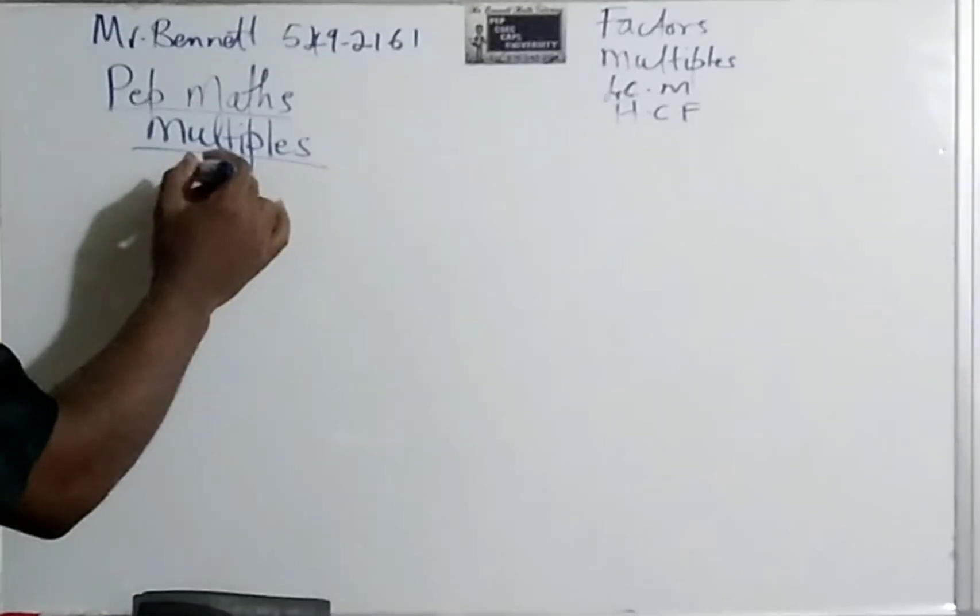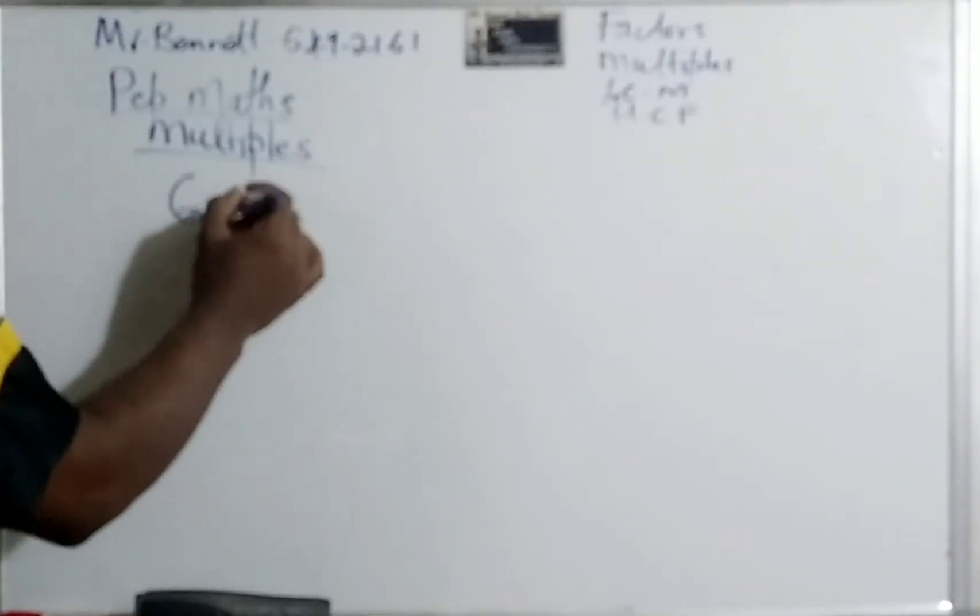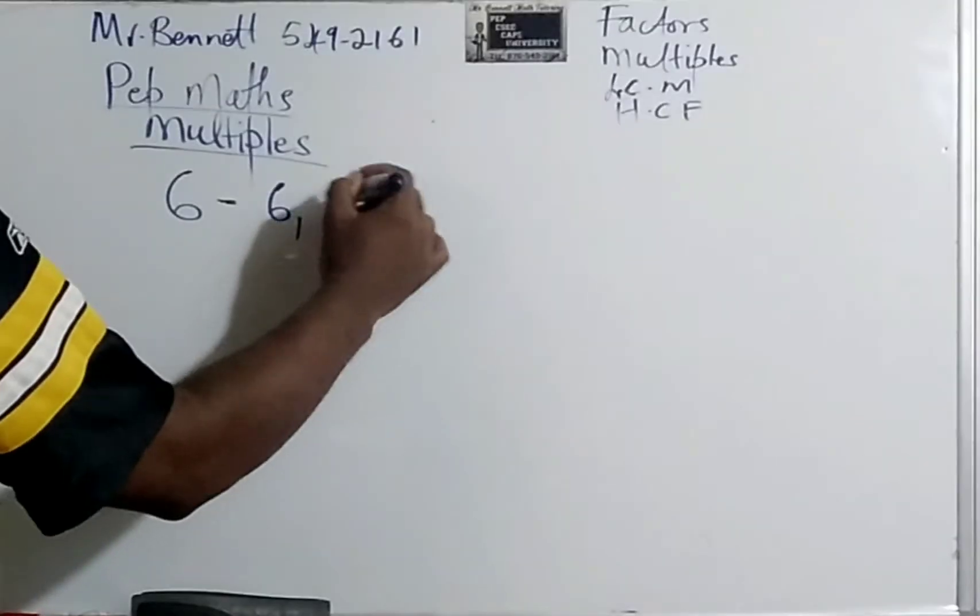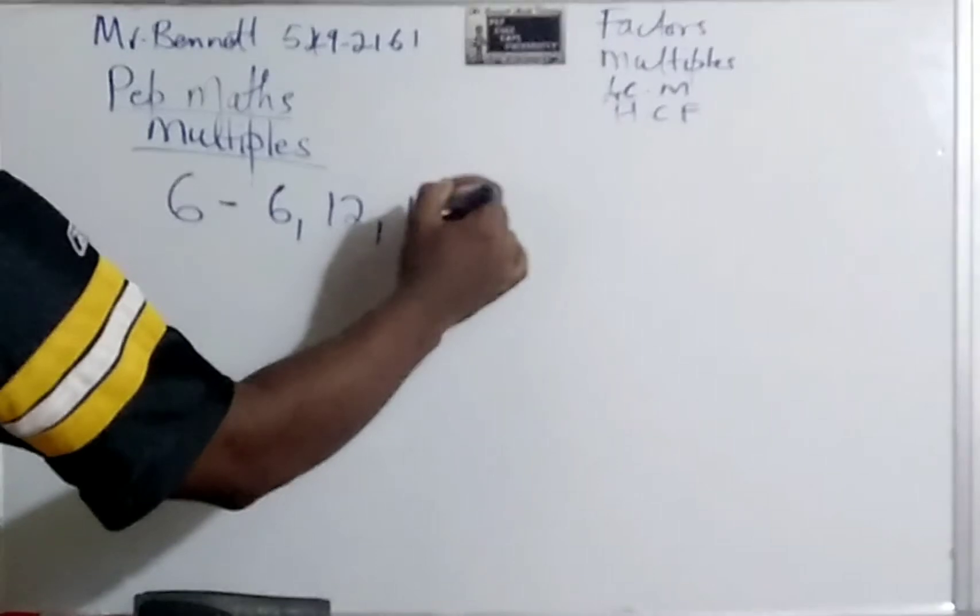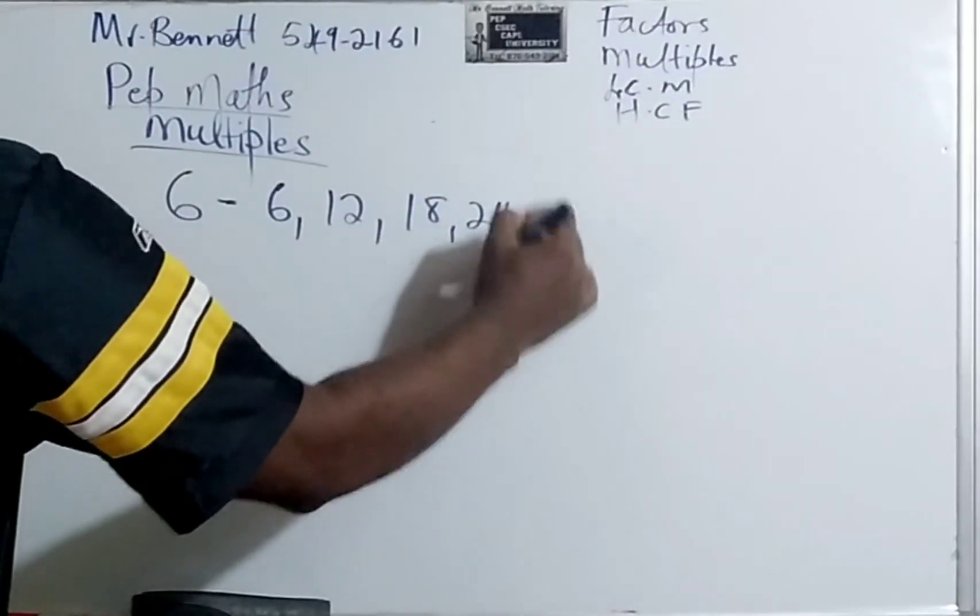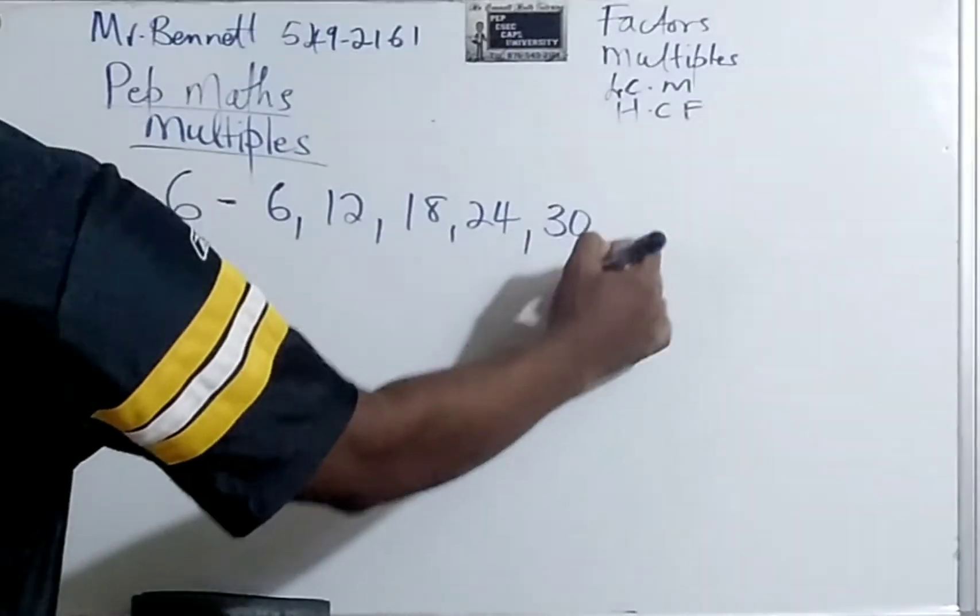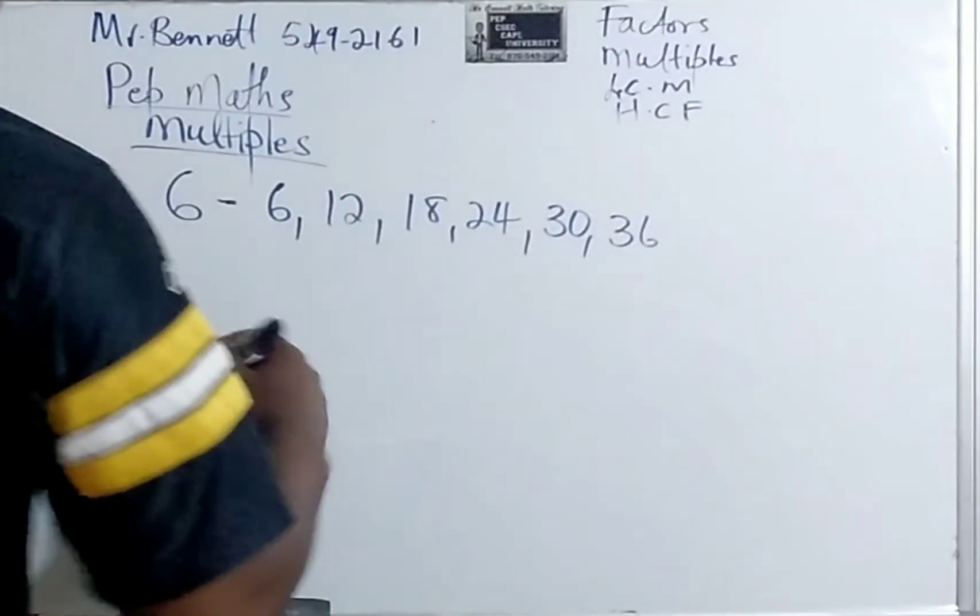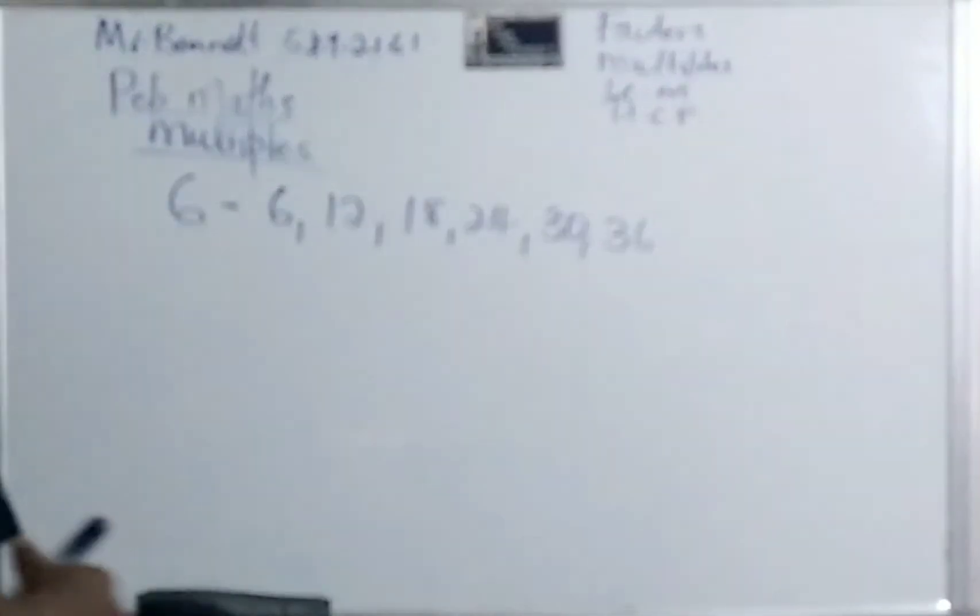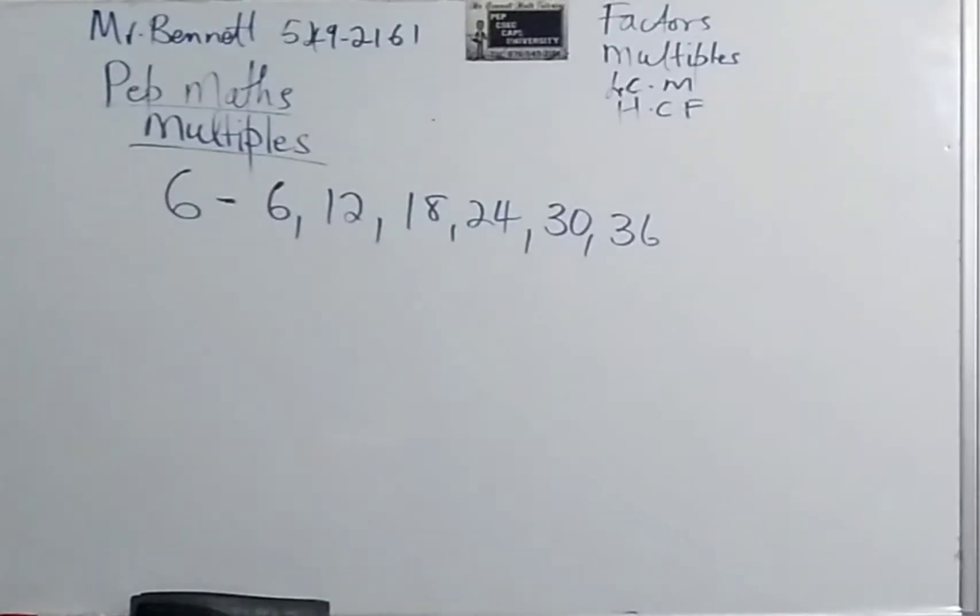So let us look at multiples of 6. 6 times 1 would be 6. 6 times 2 would be 12. 6 times 3 would be 18. 6 times 4 would be 24. 6 times 5 would be 30. And 36. If you notice, what is happening now is like you are adding 6 every time. Because remember, multiplication is repeated addition. So multiplying is really adding, adding. But you are doing it over and over.